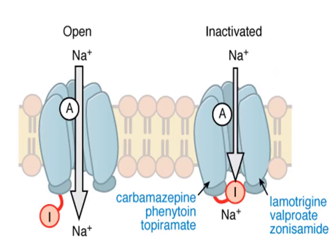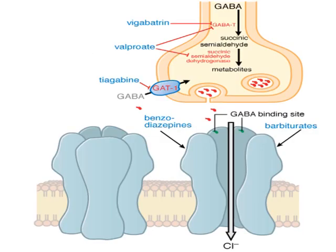This shows the open sodium channel and the inactivated sodium channel. Carbamazepine, phenytoin, and topiramate stabilize the inactivated state of sodium channels, thereby preventing repetitive firing. Benzodiazepines cause increased frequency of chloride channel opening. In contrast, barbiturates cause increased duration of chloride channel opening, and ultimately both cause hyperpolarization and relaxation of cerebral neurons.